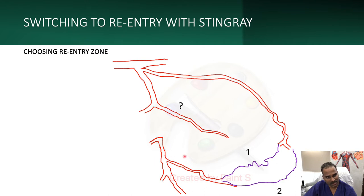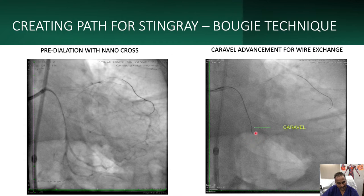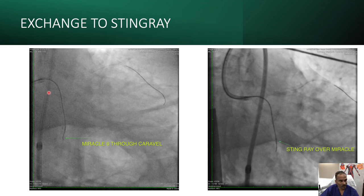To identify the re-entry zone — before the OM3 junction — we selected a good re-entry point. To create a path for the Stingray, I first took a NanoCross balloon and performed dilatation at the proximal cap. Then I advanced the Caraval microcatheter over the wire to the re-entry zone. Once Caraval was advanced, we exchanged to a Miracle 6 wire, which was positioned at the re-entry zone, and then the Stingray was brought in by exchanging Caraval.